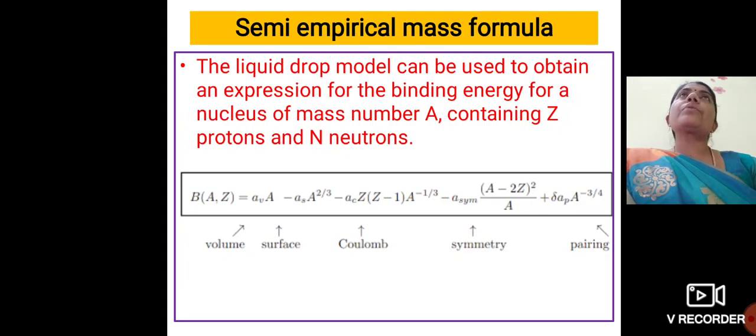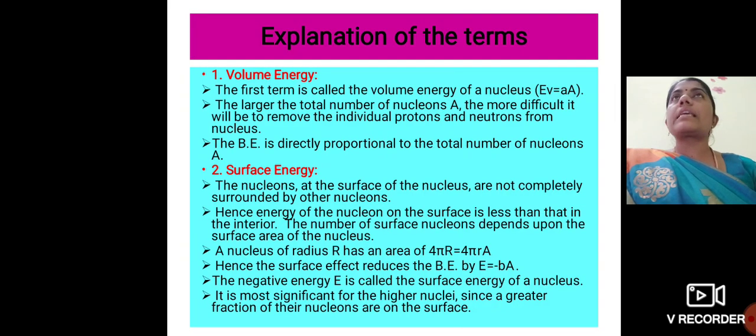Using this liquid drop model, we can obtain the expression for the binding energy of a nucleus which has a mass number A containing Z protons and N neutrons. This is the expression for the binding energy. And this equation is comprised of nearly five kinds of energy: volume energy, surface energy, coulomb energy, asymmetric energy and pairing energy. Let us see all the energies one by one.